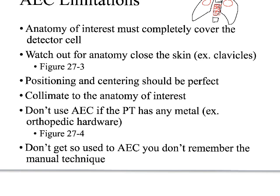Don't use an AEC if the patient has any metal — orthopedic hardware, external metal on their body. Metal attenuates x-rays — it stops them. If there's metal in the area of the ionization chamber, I wind up overexposing my patient because the x-ray tube thinks I'm trying to x-ray metal. Page 418 in the textbook has a great example using AEC with orthopedic hardware in place — it totally burned out the image, leaving just a pretty picture of the hardware floating in space.